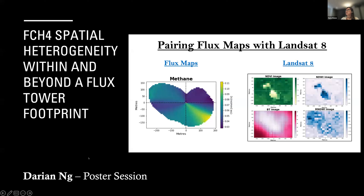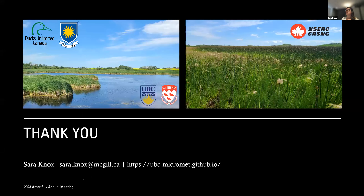Prairie pothole wetlands can be large CO2 sinks, particularly the more heterogeneous sites. Water quality has a large impact on methane fluxes and greenhouse gas budgets, and it's important to accurately consider water quality differences when estimating regional greenhouse gas. I also want to plug my former master's student Darian Ing, who is looking at relating within-flux-footprint variability and methane fluxes to remote sensing indices — please visit his poster this afternoon. Thank you, and I'm happy to take questions.